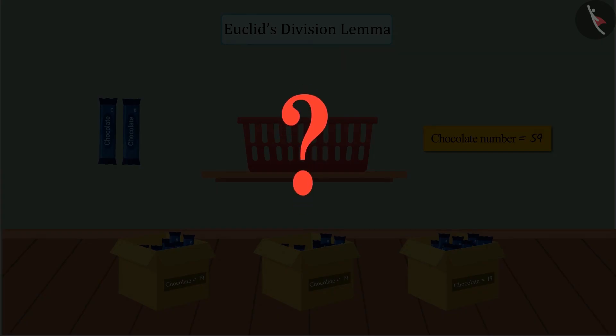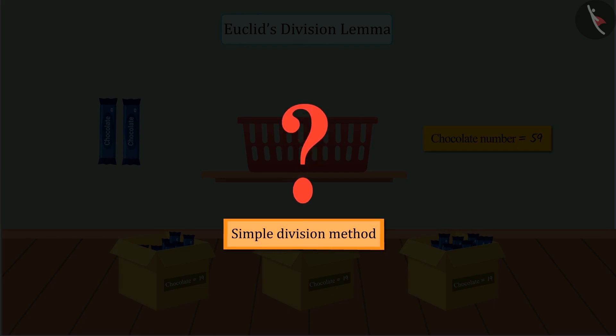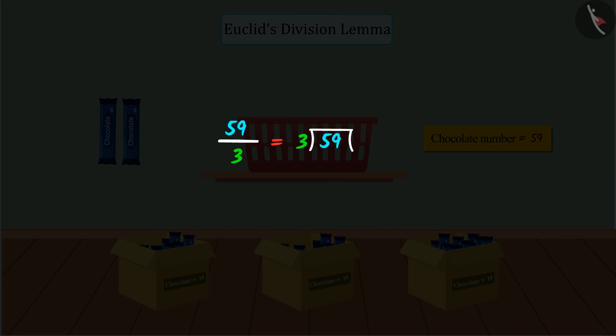Just think, now can you solve it with simple division method? Absolutely right! On solving, we get quotient equals to 19 and remainder 2, where 3 is divisor and 59 is dividend.